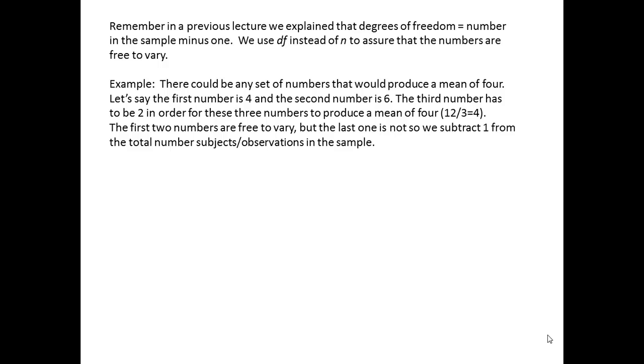Degrees of freedom is the number in the sample minus one. We use degrees of freedom instead of the total number when conducting the t-test to assure that all the numbers in the sample are free to vary. For example, there could be any set of numbers that would produce a mean of four. We could pick the first number as four and the second as six, which means the third number has to be two in order for these three numbers to produce a mean of four. The first two numbers are free to vary, but the last one is not, so we subtract one from the total number of subjects or observations in the sample.